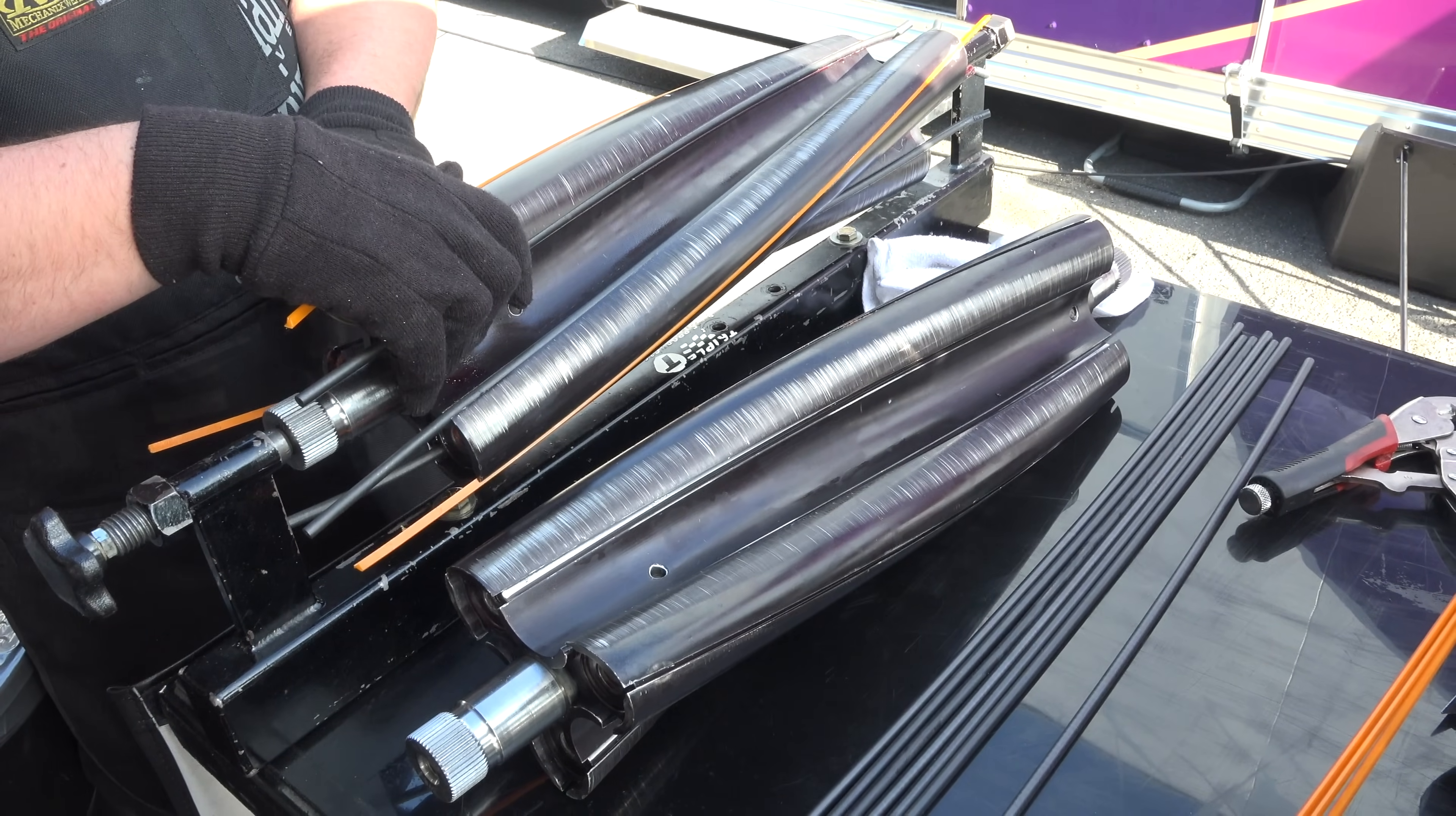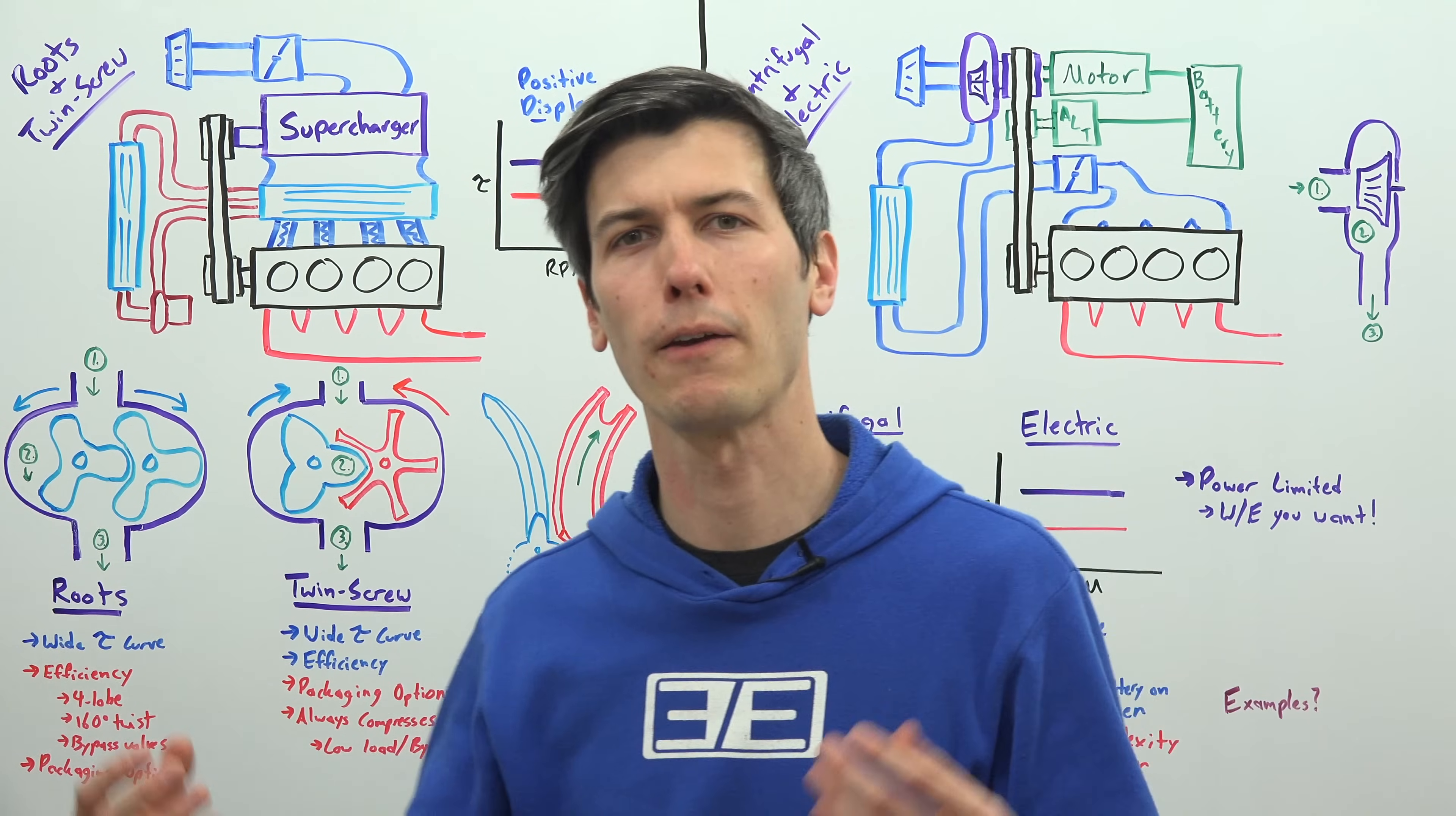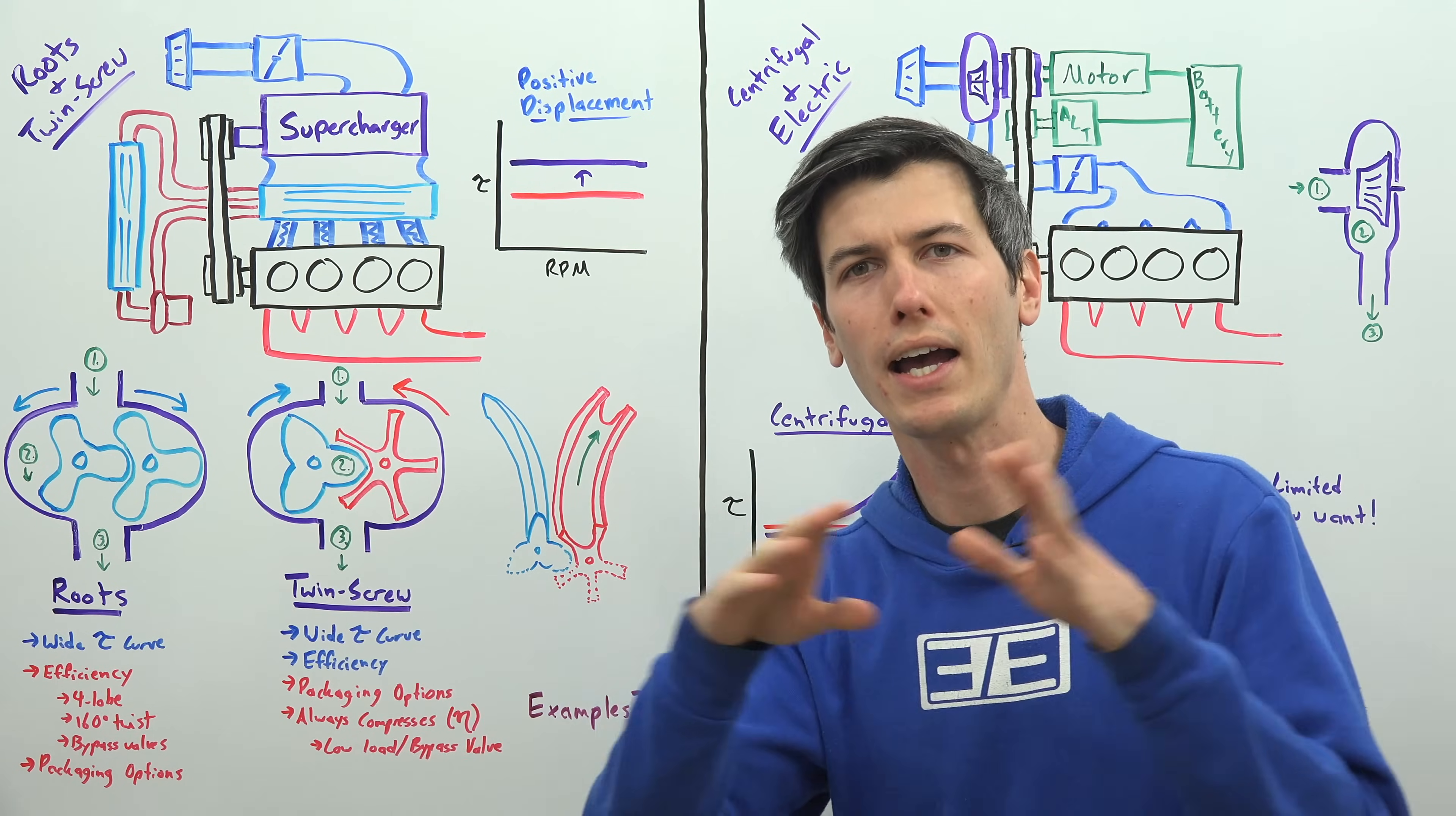Now both Roots and twin screw superchargers are described as positive displacement superchargers. And what that means is a fixed amount of air goes through with each revolution. And so what this is great for is that it means your torque curve is pretty wide - it's effective,